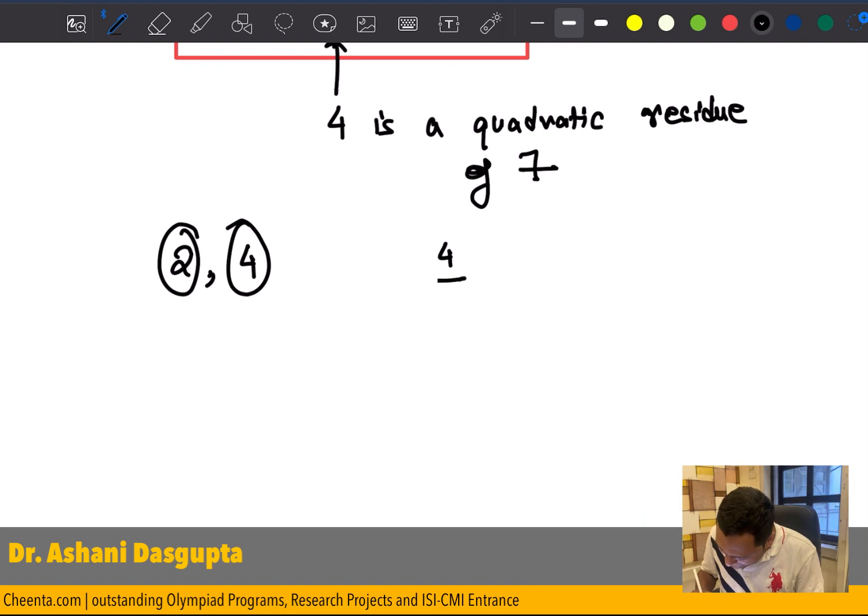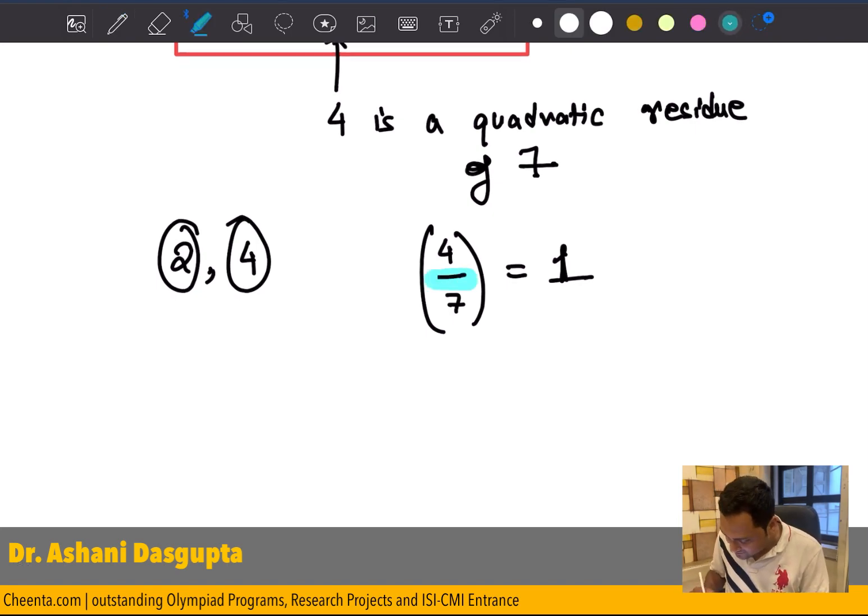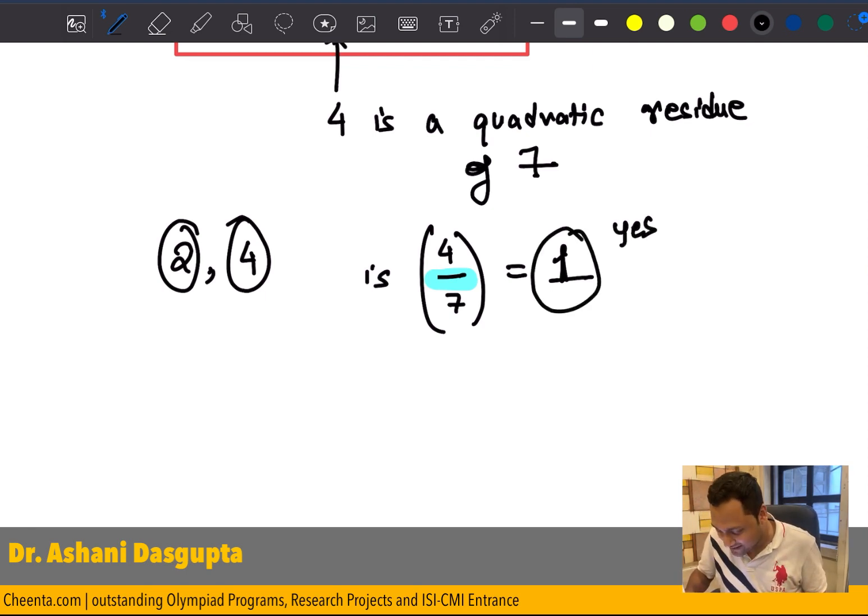So, we can again write, 4 is modulo 7, a quadratic residue. This is just the is. The division sign is is, okay, just think like that. So, 4 is modulo 7, a quadratic residue. And that, yes, it is a quadratic residue, is given by the number 1. So, the other one will be just the number minus 1.